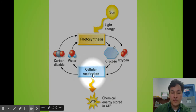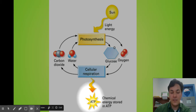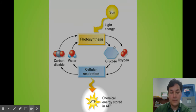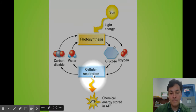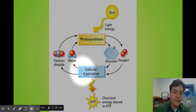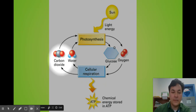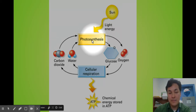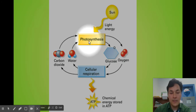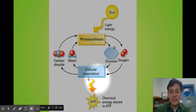In a process called cellular respiration, we break down glucose with the assistance of oxygen to make ATP. ATP is energy — it's the party molecule, it gets things done. This happens in the mitochondria. As we do cellular respiration, we give off water and carbon dioxide. The products of cellular respiration are the reactants of photosynthesis, and the products of photosynthesis are the reactants of cellular respiration.